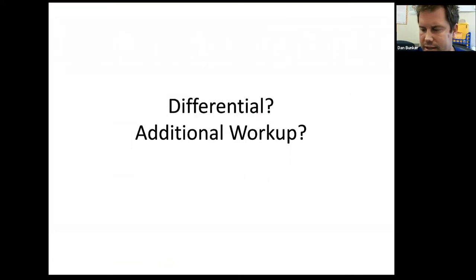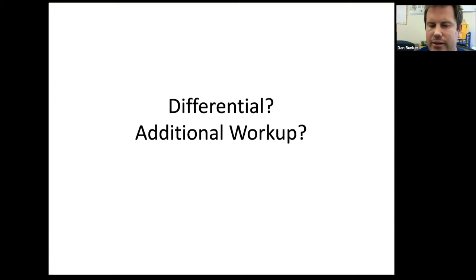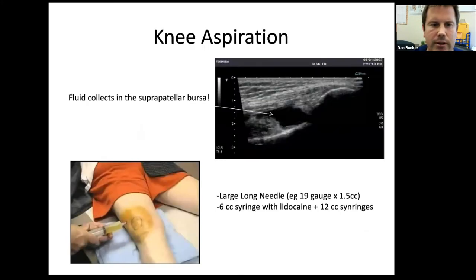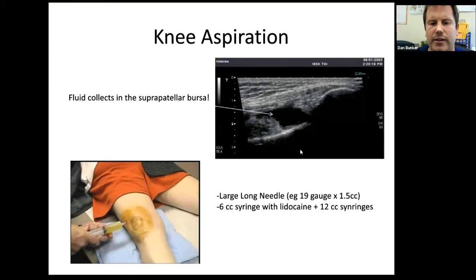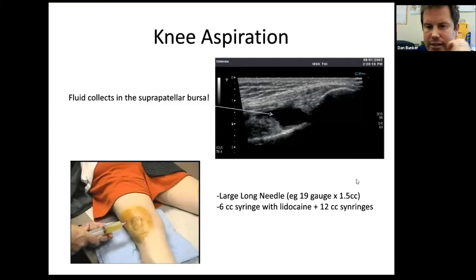The differential for this case is the same as before: acute monoarticular arthritis — crystalline arthropathy, infectious, or some traumatic event. The additional workup answer is aspiration. Here's how to do a knee aspiration on ultrasound: you can see the femur, patella, and quadriceps tendon inserting into the proximal patella. Ultrasound can't penetrate bone, but you can see fluid leaking out and layering into the suprapatellar space. To do a knee aspiration, the needle goes far above the patella and comes in from the side — it's a very easy procedure that all of you could do.